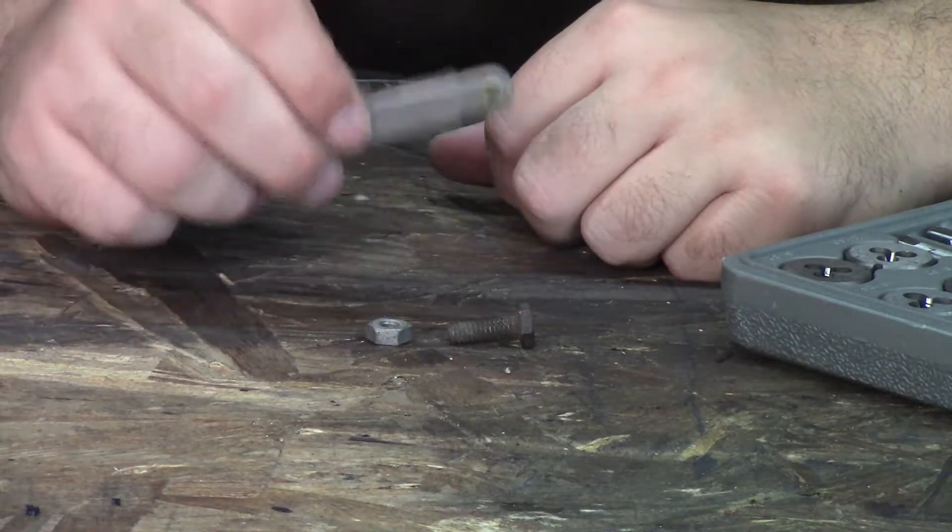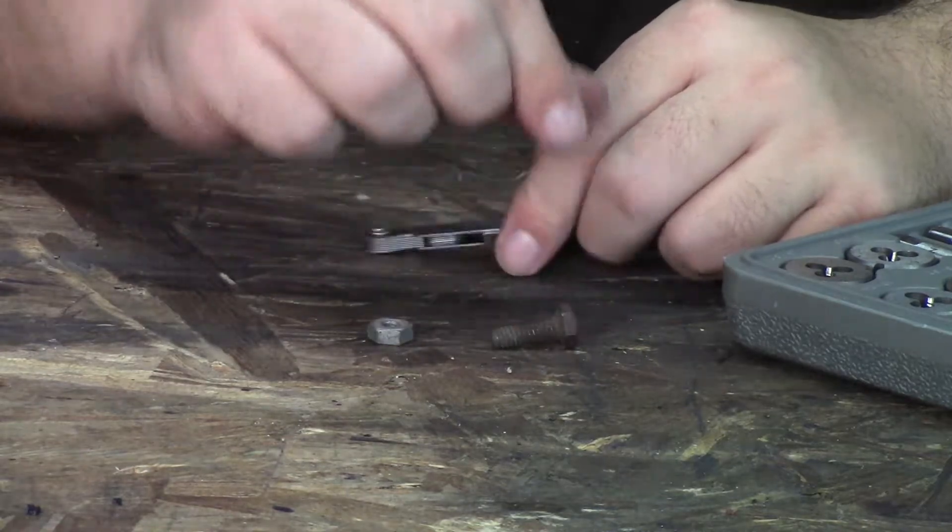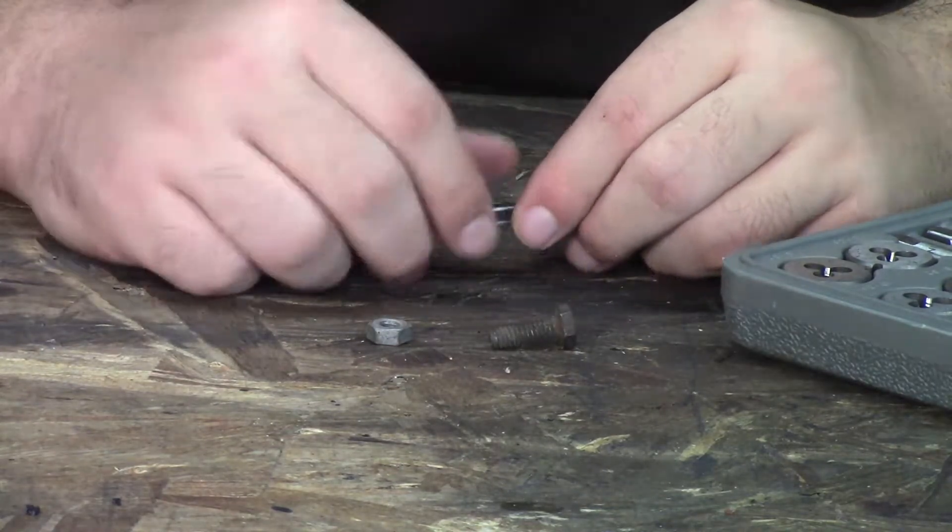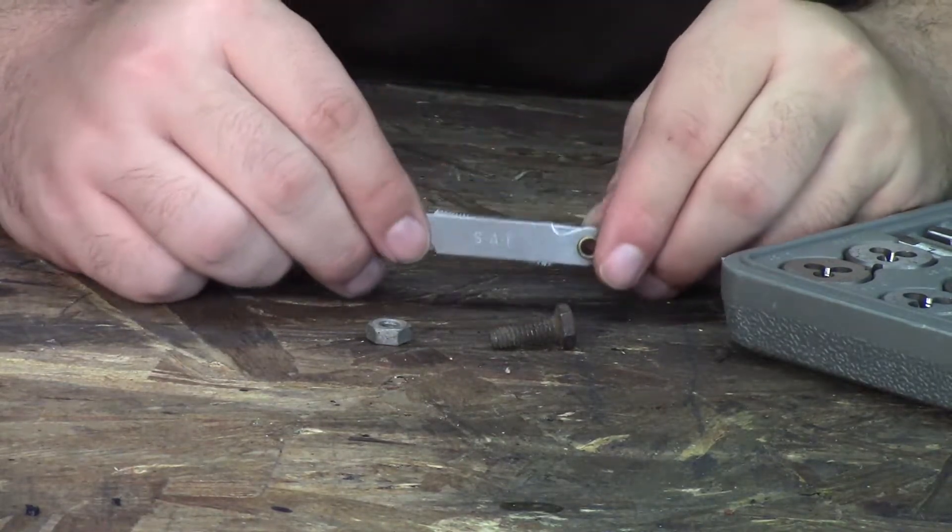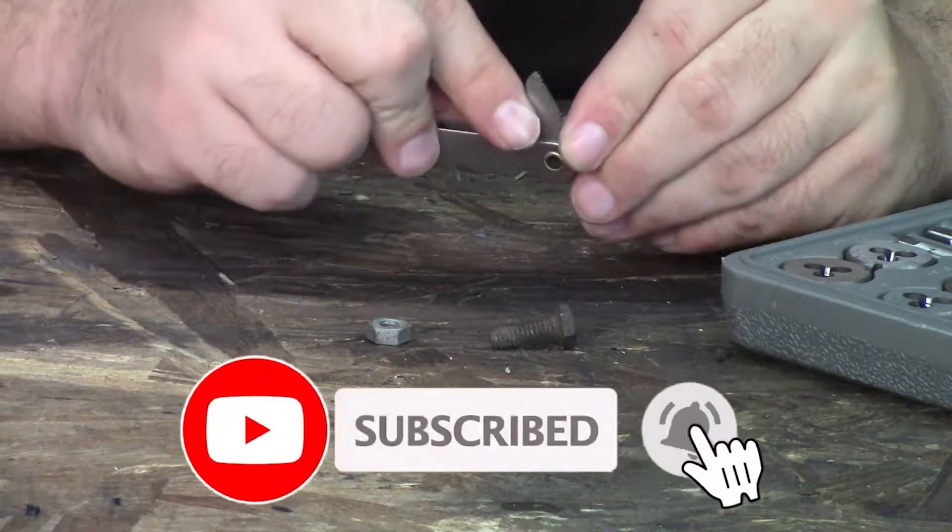To use a tap and die set, first you need to figure out what your thread pattern is on your nut and bolt using this gauge. It has all the standard sizes built into it.